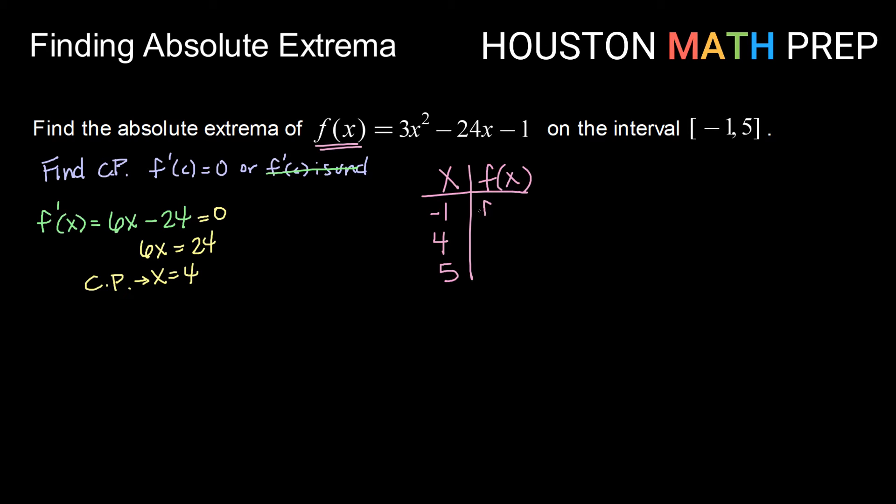So here I'm going to find f(-1) by taking -1 and replacing it in for all the x's in my function. That comes out to be 26. Do the same thing for 4 and for 5. For f(4), I have a value of -49. And for f(5), I have a value of -46.